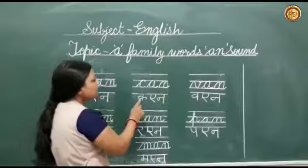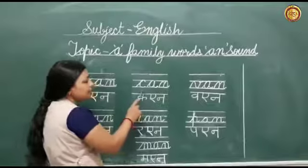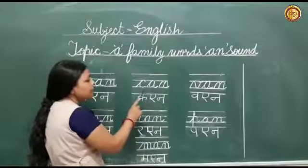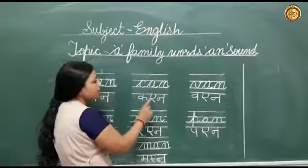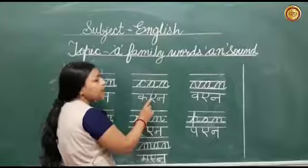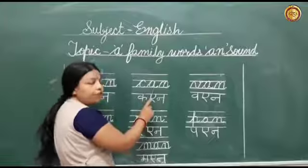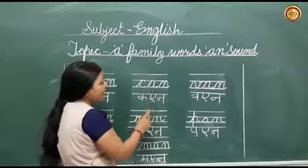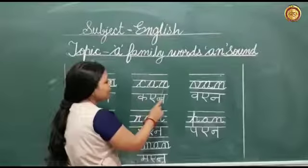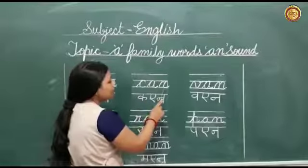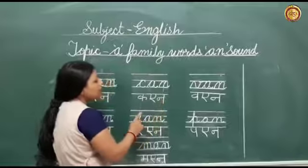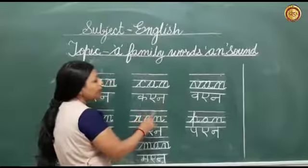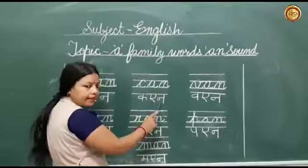This is letter C. The sound of C is 'cuh'. This is letter A. The sound of A is 'A'. This is letter N. The sound of N is 'N'. cuh, A, N — CAN.